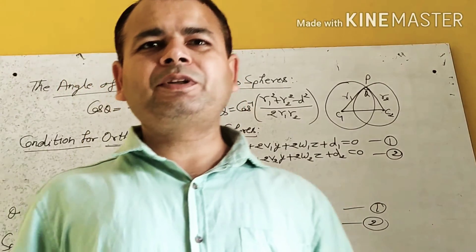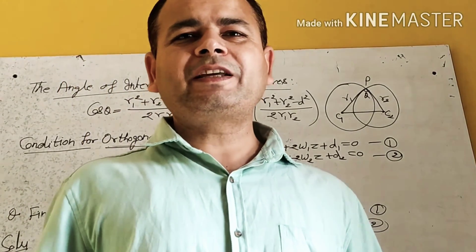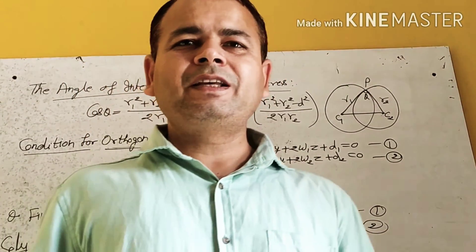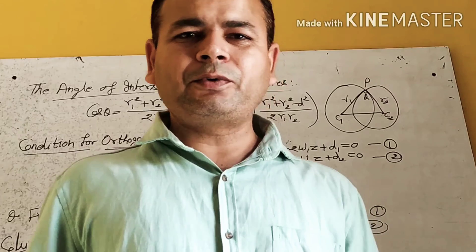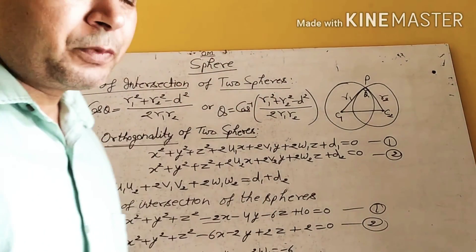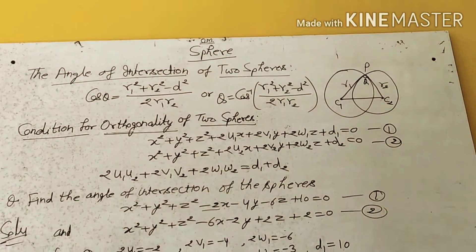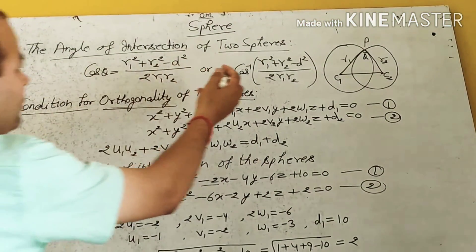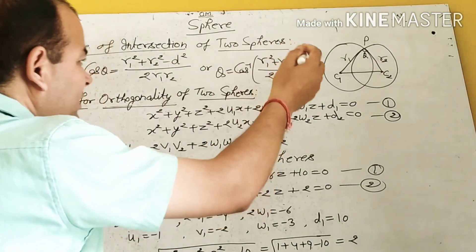Hello students. In this video we will discuss the angle of intersection of 2 spheres and condition for orthogonality of 2 spheres. So first, the angle of intersection of 2 spheres.